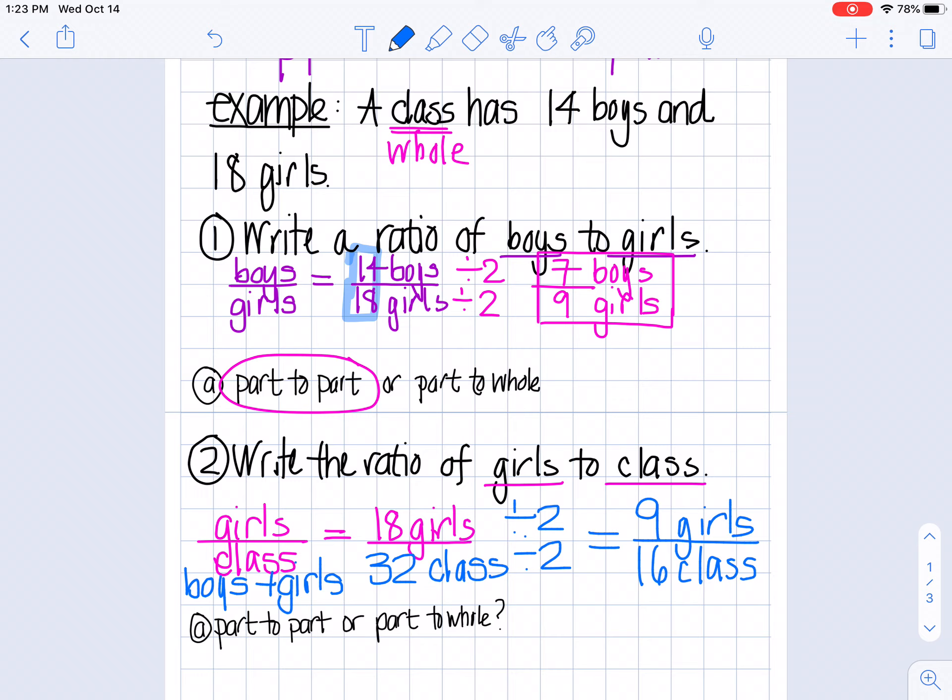Now, did I simplify it enough? Is there a number that evenly goes into nine and 16? Let's see. Three goes into nine, but it doesn't go into 16. And there's no other numbers that go into nine besides nine and one. So that's the simplest form. So my final answer would be nine girls to 16 in the class.